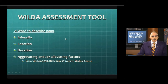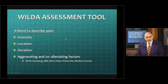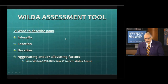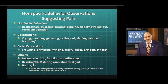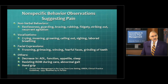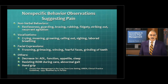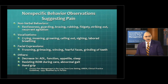Brian Ginsberg developed an excellent tool — one word to describe the intensity of the pain, the location of the pain, and the duration — which is used by the Joint Commission for describing what are the aggravating factors or alleviating or actually causing increase of pain. We have also nonspecific behavioral observations suggesting pain. What if a patient has severe dementia? Can they tell you the type of pain? Can they rate their pain? They can't even speak. They may have aphasia, apraxia, agnosia, and subsequently they're not able to tell you what their pain is.